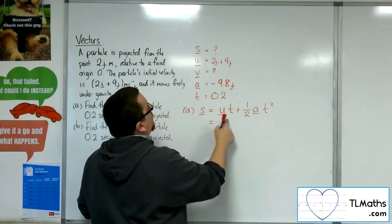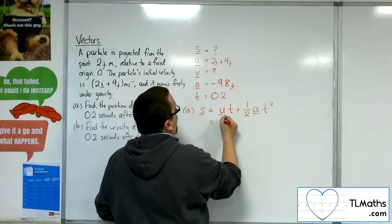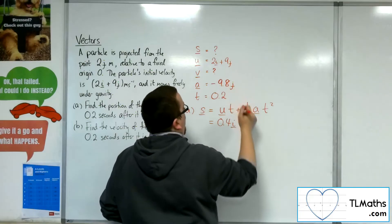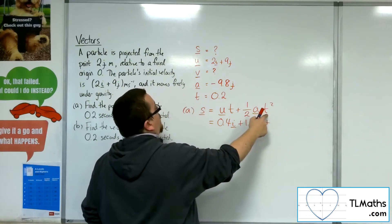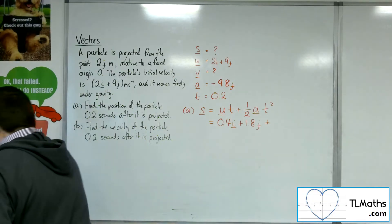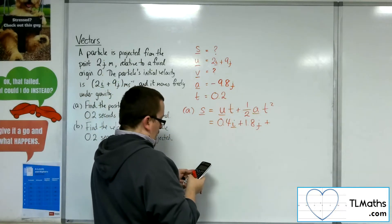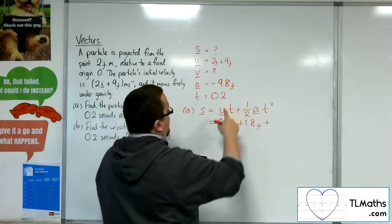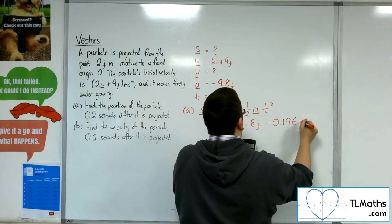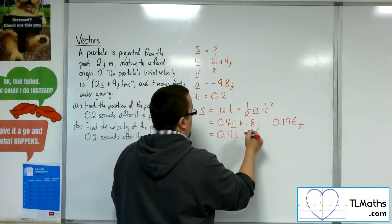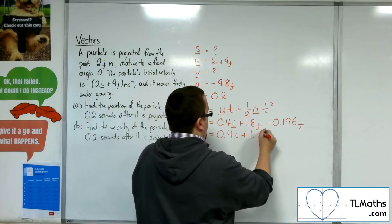So U times T: 2i plus 9j times 0.2 gives 0.4i plus 1.8j. Plus 0.5 times A times T squared: 0.5 times minus 9.8 times 0.2 squared gives minus 0.196j. So the displacement S is 0.4i plus 1.604j.